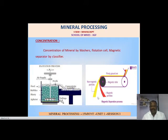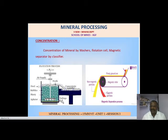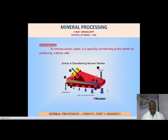For the separation of gangue mineral from iron ore, magnetic attraction is used. The material is supplied on a conveyor belt where one side of the pulley contains a magnet. As material passes over it, magnetic material is collected near the pulley while non-magnetic gangue mineral falls away. This is how we separate the minerals using magnetic separation. Next we will see dewatering.